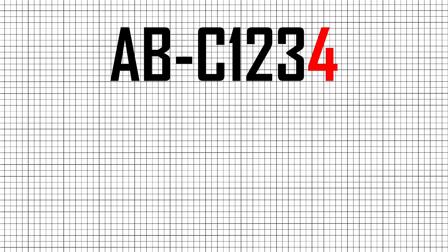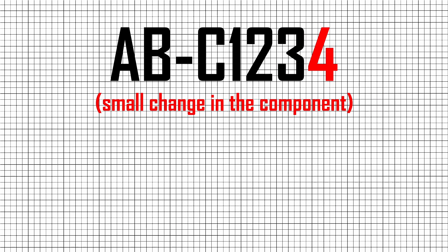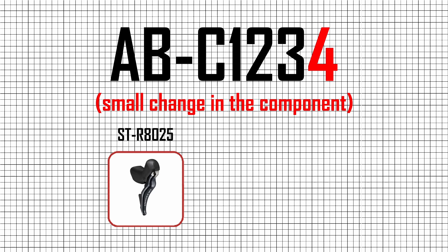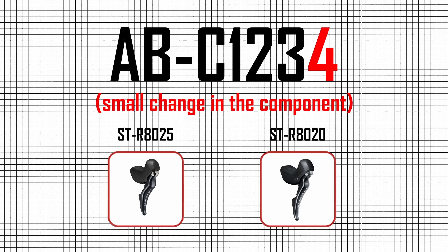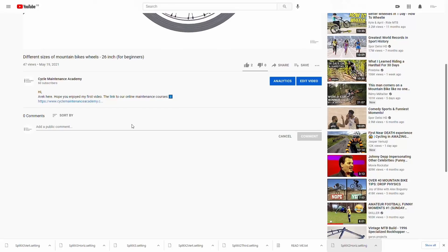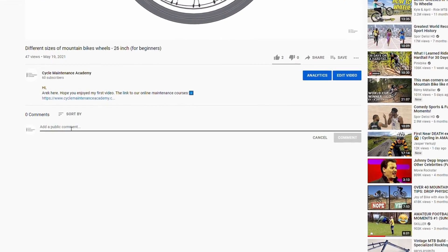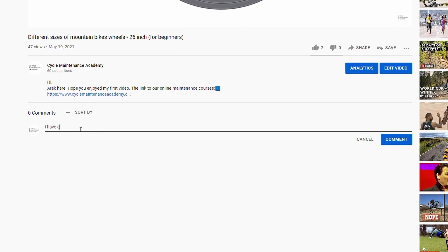The fourth number indicates a small change that doesn't affect compatibility within the family. Here is an example: the ST-R8025 STI lever has a slightly smaller lever size than the ST-R8020 STI lever. I hope you enjoyed that — let us know how you got on with the Shimano codes.